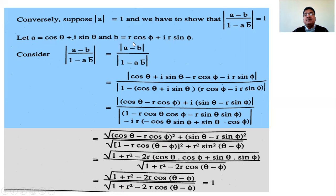With a = cosθ + i·sinθ and b = r(cosφ + i·sinφ), substitute into the expression. Separate the modulus of numerator and denominator. The numerator becomes (cosθ - r·cosφ) + i(sinθ - r·sinφ), and the denominator, after expanding (1 - ab̄), yields its real and imaginary parts.